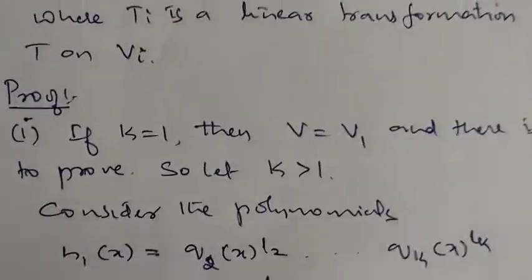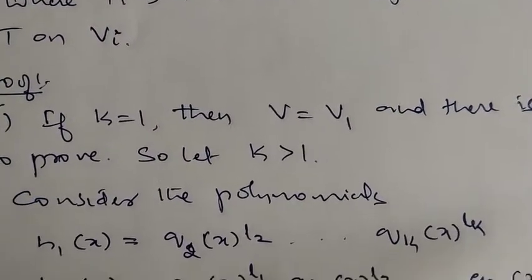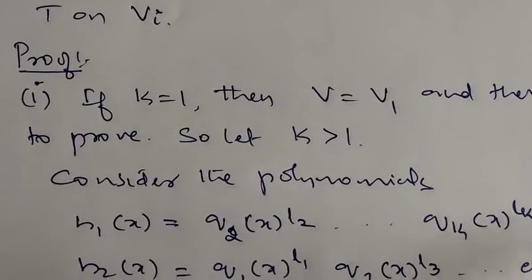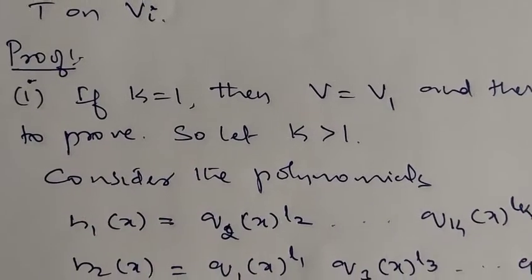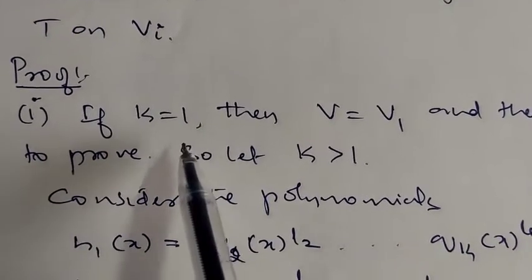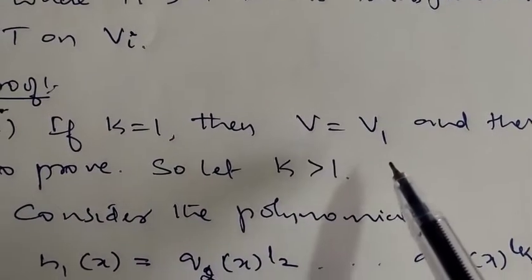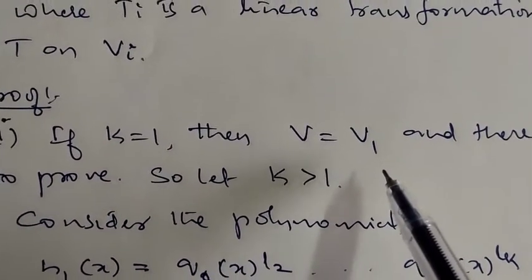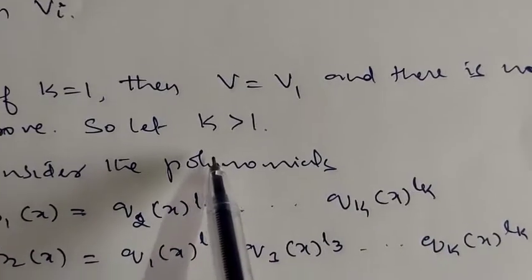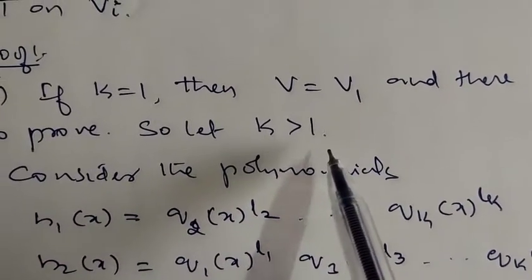First, let us prove each Vi is non-zero. If k = 1, then V = V1 and there is nothing to prove. So let k > 1.